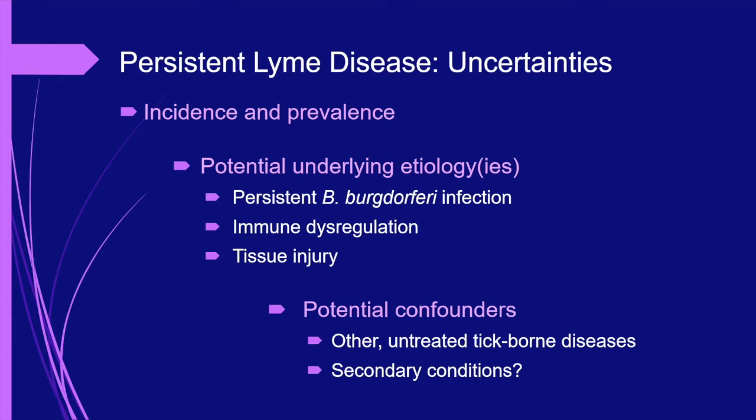Because we do not know the overall incidence or the natural history of persistent disease, it is impossible to estimate its prevalence. The underlying pathophysiologic mechanisms are also unknown. Potential mechanisms include immune dysregulation of many sorts, tissue injury that is either permanent or slow to heal, and persistent infection with Borrelia burgdorferi. It is certainly possible that all of these mechanisms are in play, with different mechanisms affecting different patients, and in a given patient, persistent manifestations may be fueled by more than one mechanism.